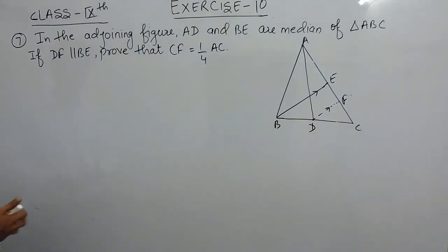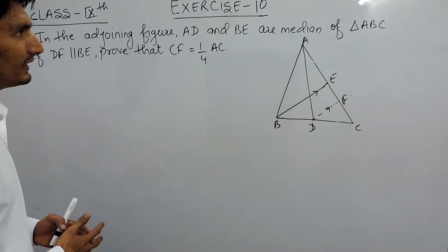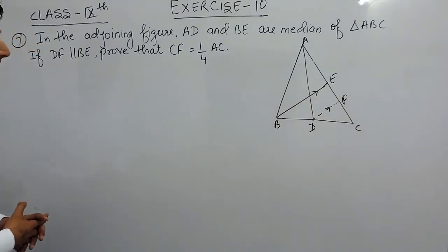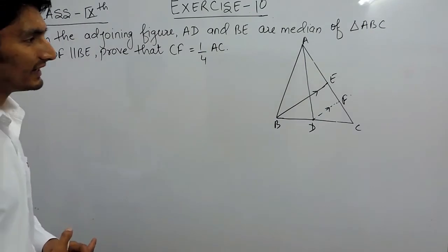In this question, we are given a figure where AD and BE are the medians of triangle ABC and DF is given parallel to BE. We have to prove that CF is equal to one-fourth of AC.